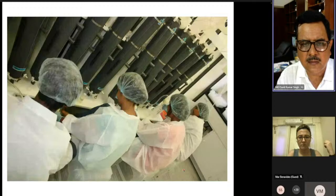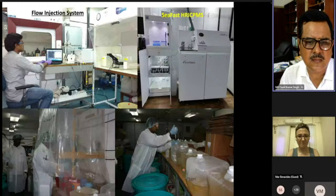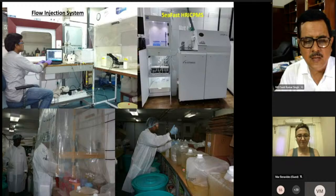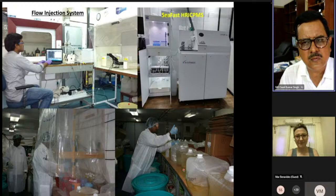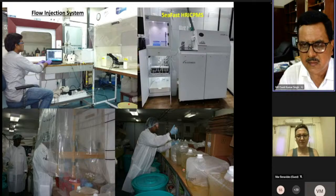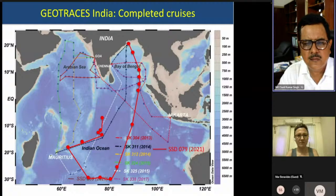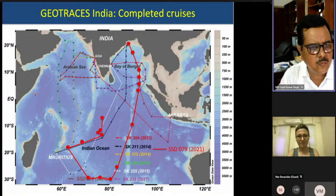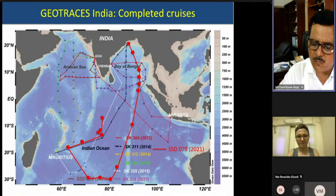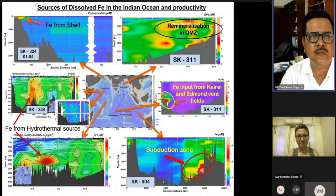A clean sampling system was established. Initially, a flow injection system onboard Sagar Kanya was used to measure iron, manganese, aluminum, and zinc. Later, a SeaFAST HR-ICPMS system in an offshore laboratory was used for continuous measurement of dissolved trace metal composition in seawater and pore waters. By now, most of the Indian Ocean has been sampled across eight cruises from the north Indian Ocean to 30°S, and into the eastern Indian Ocean and western Arabian Sea.